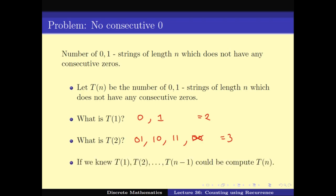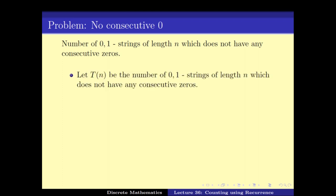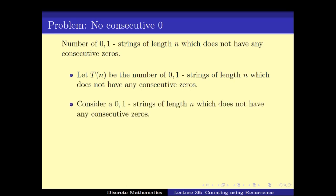We could keep counting T_3, T_4, and so on manually, but that is a very bad approach. The key question is: if we know T_1 through T_{n-1}, is there a way to compute T_n? This is like the induction step — first establish T_1 through T_{n-1}, then use them to get T_n. So consider a 0-1 string of length n that does not contain any consecutive 0s. It looks like x_1, x_2, ..., x_n.